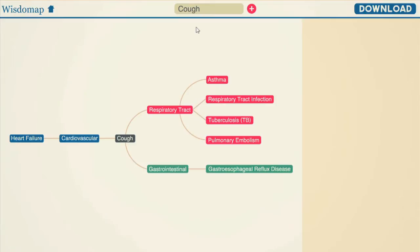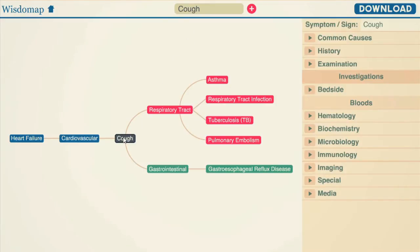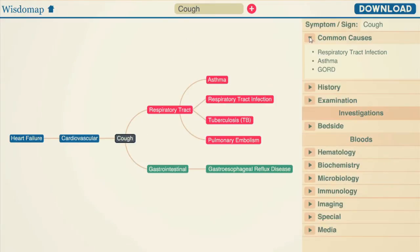Wisdomap works intuitively by starting with the symptom. Each symptom is then broken down into handy subsections that are easier to remember.